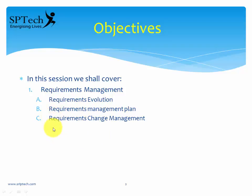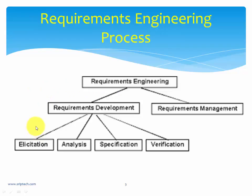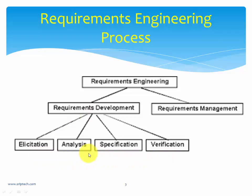In the earlier video we have seen what the requirements engineering process is. I had explained that the requirements engineering process had two main stages: one is called requirements development and the second one is called requirements management. The requirements development in turn had four sub-stages: elicitation, analysis, specification, and verification. If you have not seen that video, I would prefer you to go back and watch my earlier requirements engineering process video.